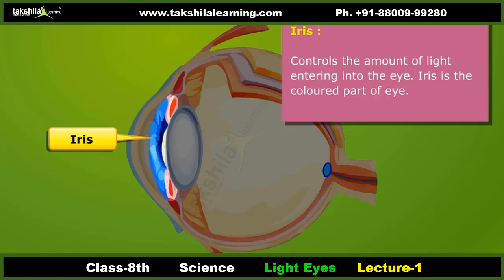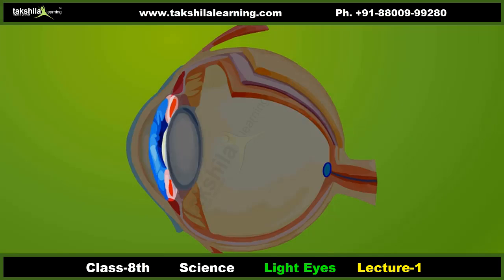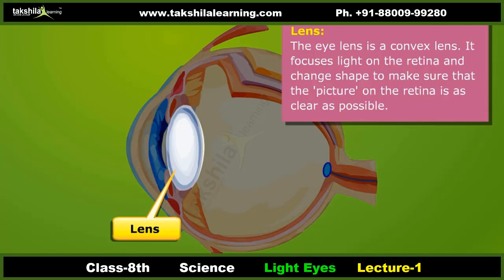Iris: The iris is the colored part of the eye, which may be black, brown, green, or blue in color. It controls the amount of light entering the eye. The color, texture, and patterns of each person's iris are as unique as a fingerprint.